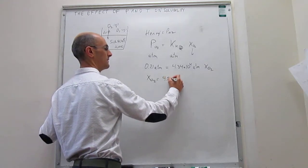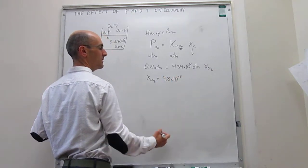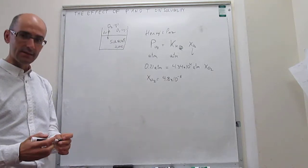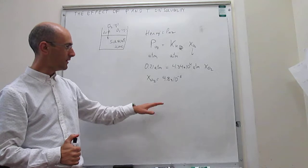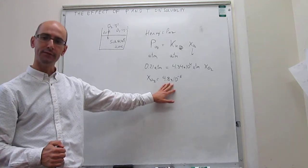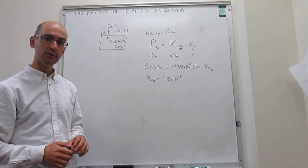What this means is that for every million molecules of water, you're going to have about 5 or so molecules of oxygen. So there's not a lot of oxygen.